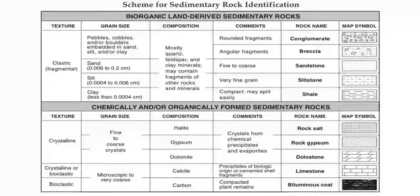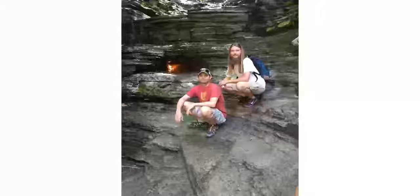If you look at page seven of your reference table — the scheme to identify sedimentary rocks — we'll use this for the sedimentary rock lab. The different types of sediments are described by texture. Here texture describes the origin of where sediments came from. The categories for texture are clastic in the top left corner, crystalline, and below that bioclastic.